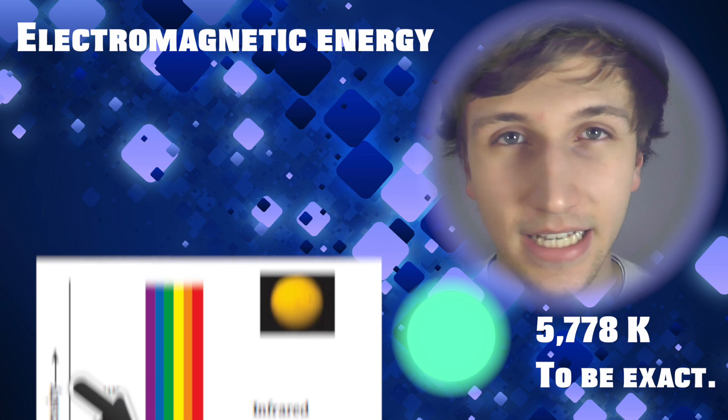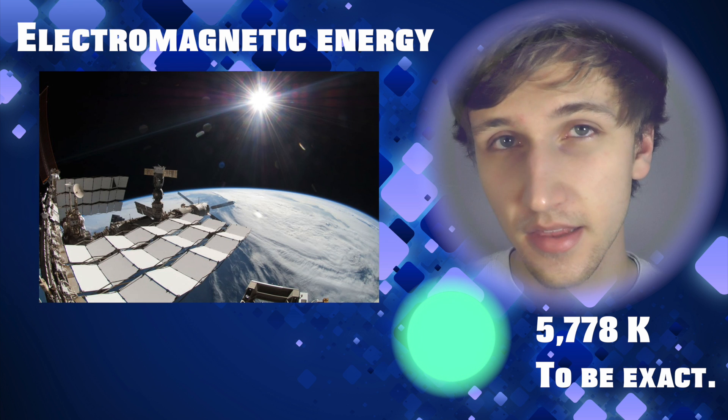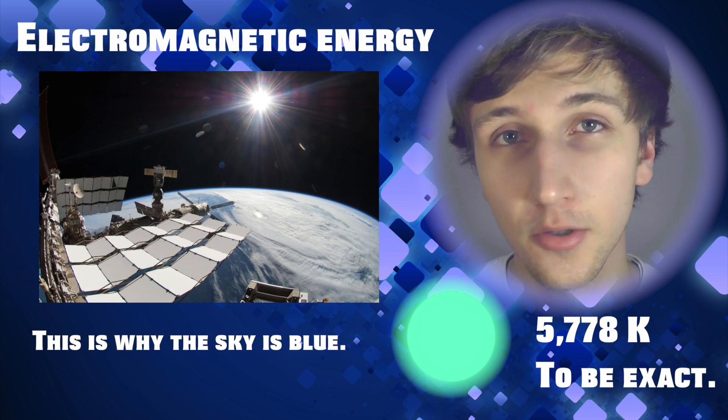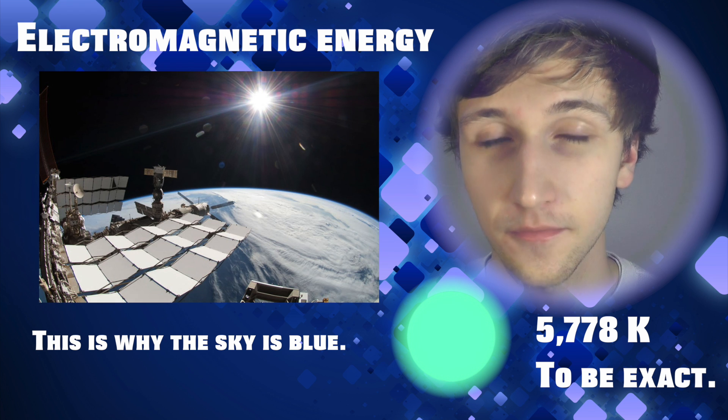On Earth, we see the sun is yellow because our atmosphere displaces the blue, making our atmosphere look blue, leaving just yellowish colors left to represent the sun.